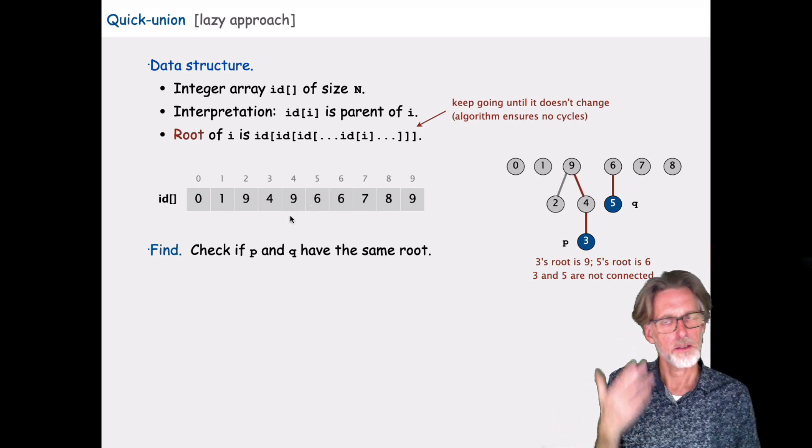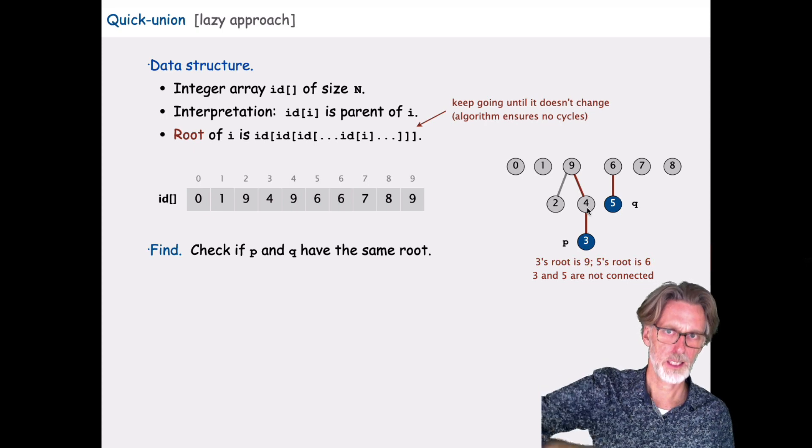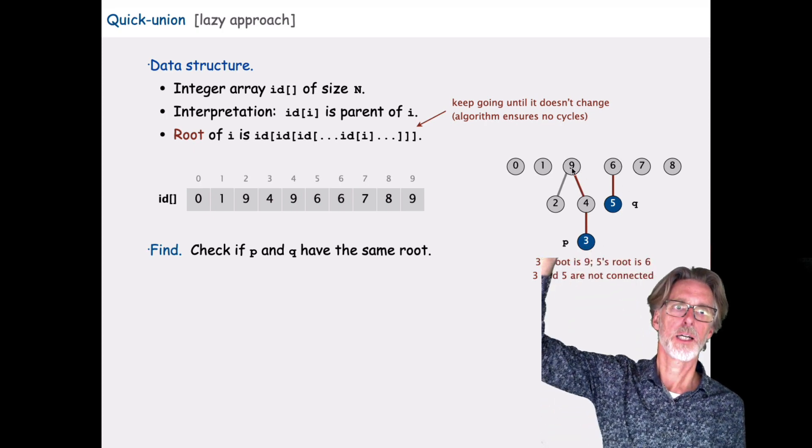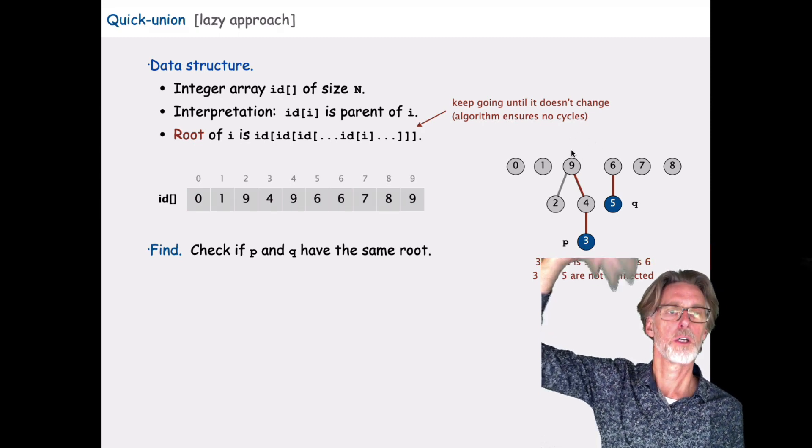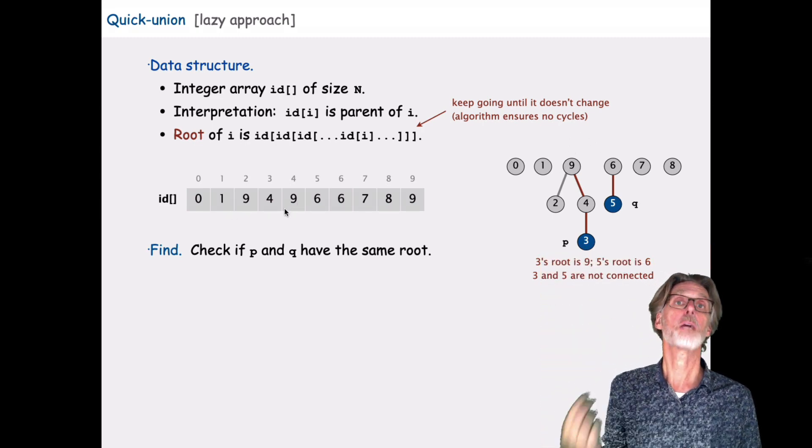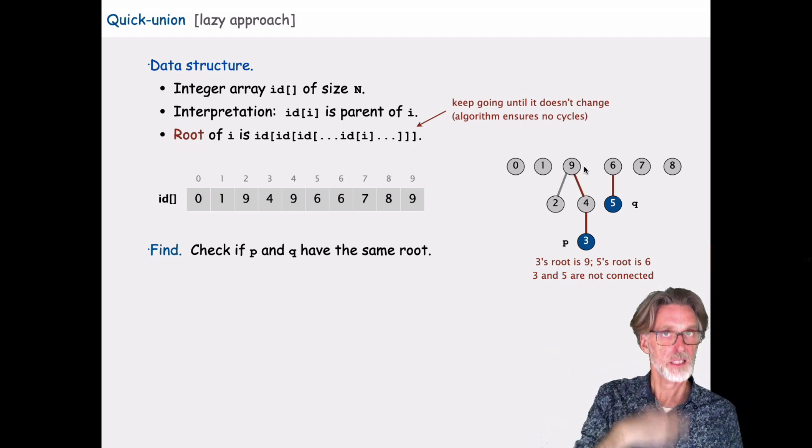The way we're going to do this is to go up, if you like, through this structure, thinking of it as this kind of tree structure. We're going to go up until we hit a root. So a root, in this case, will be something that is its own champion. So 9 is its own champion, and therefore, it's a root.